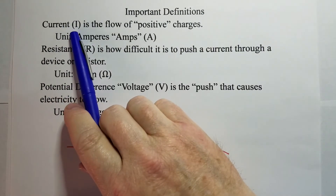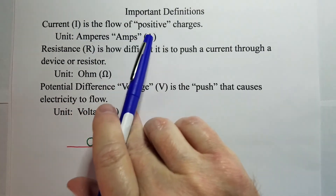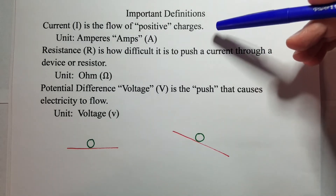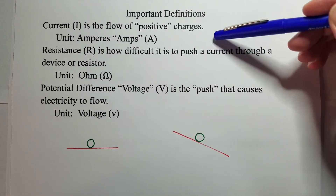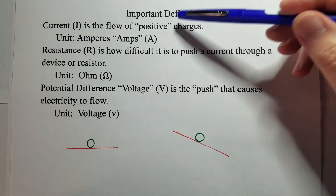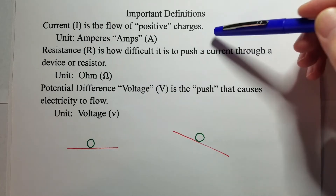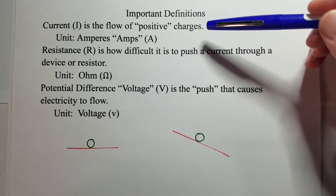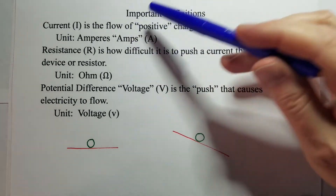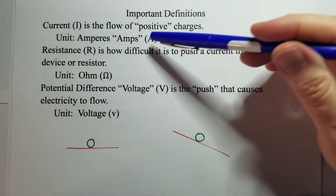Some important definitions: current — I'm going to use the conventional definition, which is that current is the flow of positive charges. Ben Franklin came up with that, and out of respect for him we keep the same definition even though we know it's technically not right. Positive charges are not actually moving; it's the electrons moving from one side of the battery to the other. But Franklin got it exactly wrong, so we can still use it — things like right-hand rules are based on it. Current is measured in amperes, or amps, usually written as just 'A' after the number.